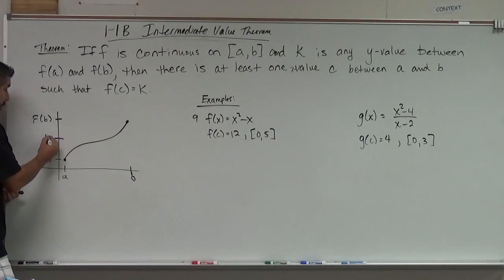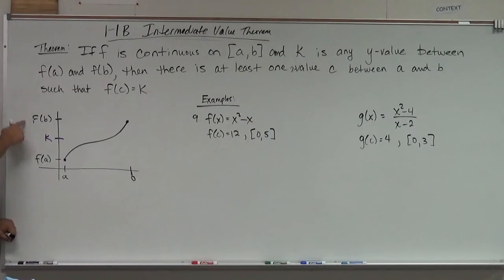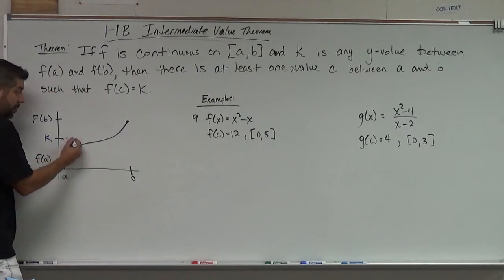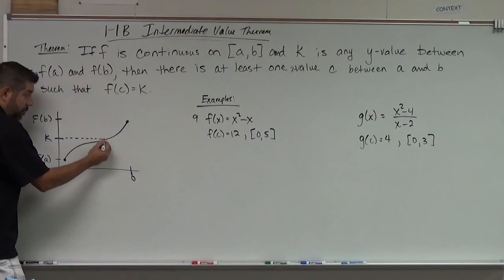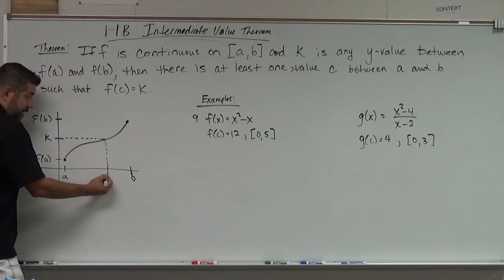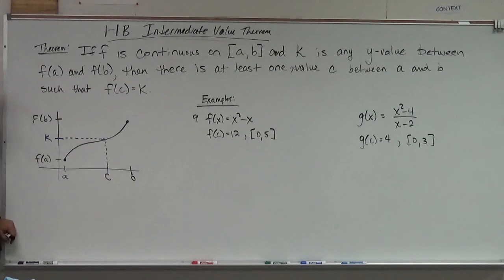and k is somewhere in between here. So k is in between here somewhere. Then there must be a value that corresponds to k that's in between a and b, and we call that c.